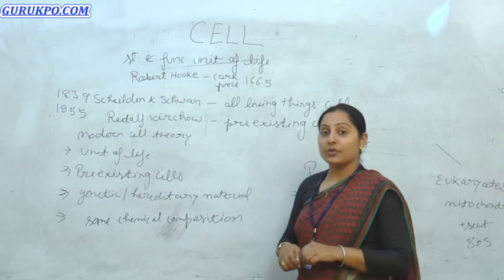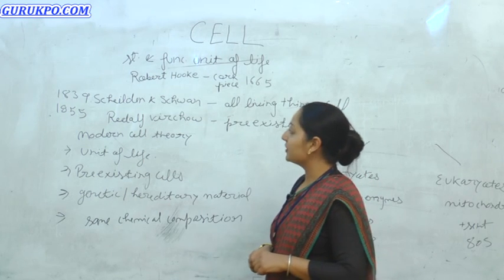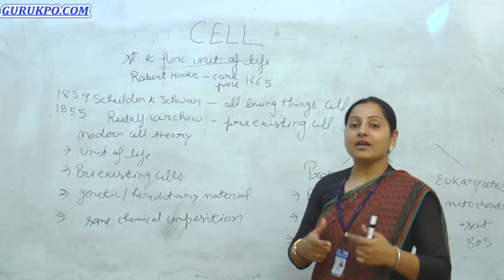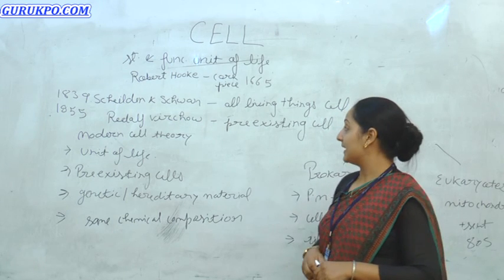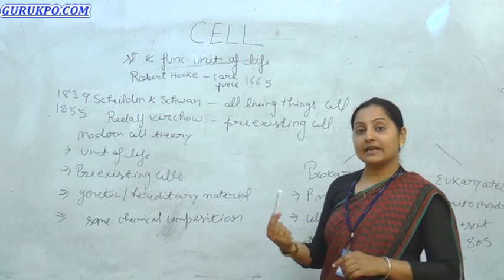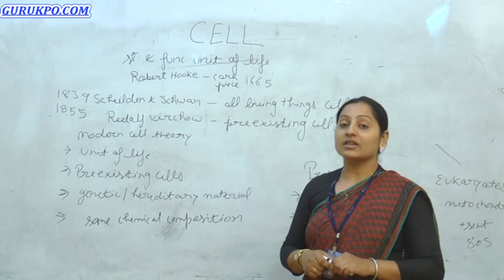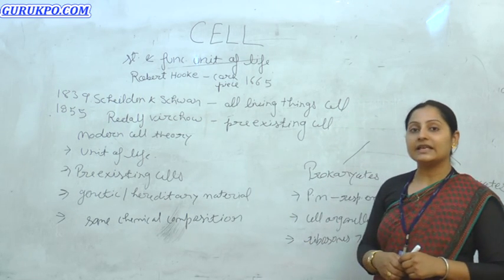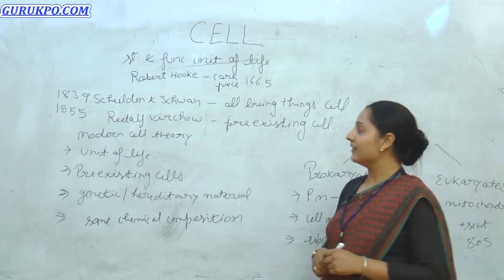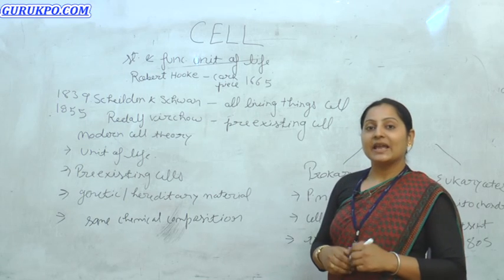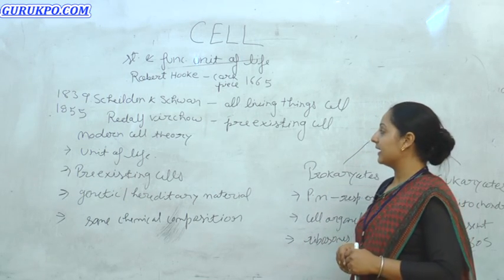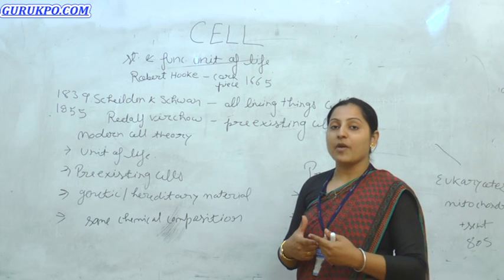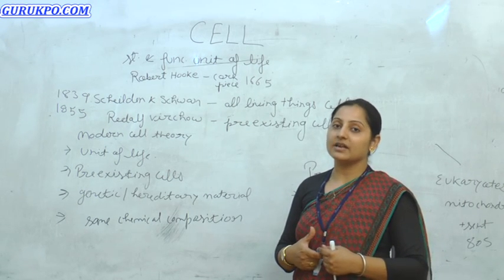After that, discoveries and amendments were made, and then came the cell theory. The scientists Schleiden and Schwann, in 1839, made a remarkable statement about the cell — that all living things are made up of cells. Then in 1855, Rudolf Virchow made the next amendment, stating that all cells come from pre-existing cells by cell division.